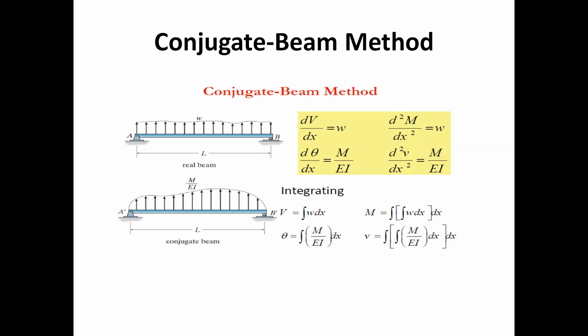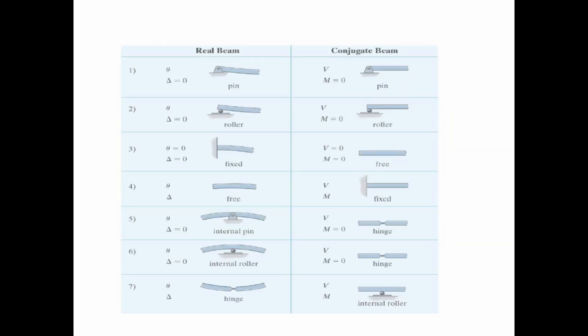In the conjugate beam, the shear force gives the slope (theta) and the bending moment gives the deflection. I will show the diagram of the real beam and how to convert it. A pin joint remains a pin, and a roller support remains a roller.